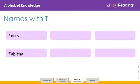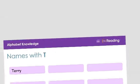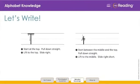Now let's practice writing the uppercase T and the lowercase T. Go ahead and get your pointer finger ready. To write the uppercase T, we start at the top, pull straight down, lift to the top, slide right. Let's practice again. Start at the top, pull straight down, lift to the top, slide right. You practice making the capital letter T on your own. Very good.